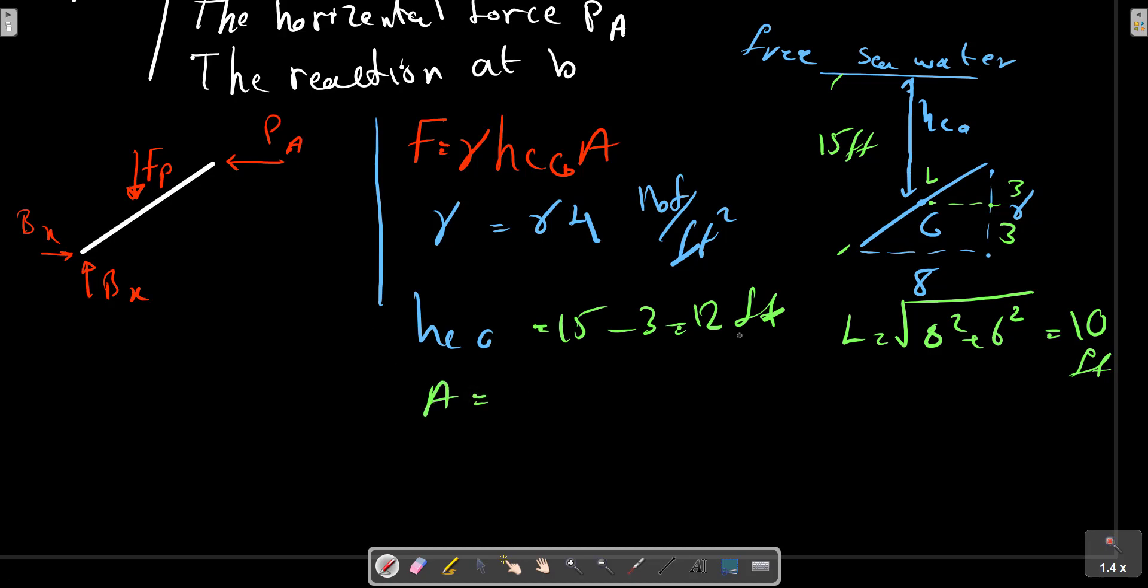And A equals to 10 multiplied by the width which was 5, 50 square feet.